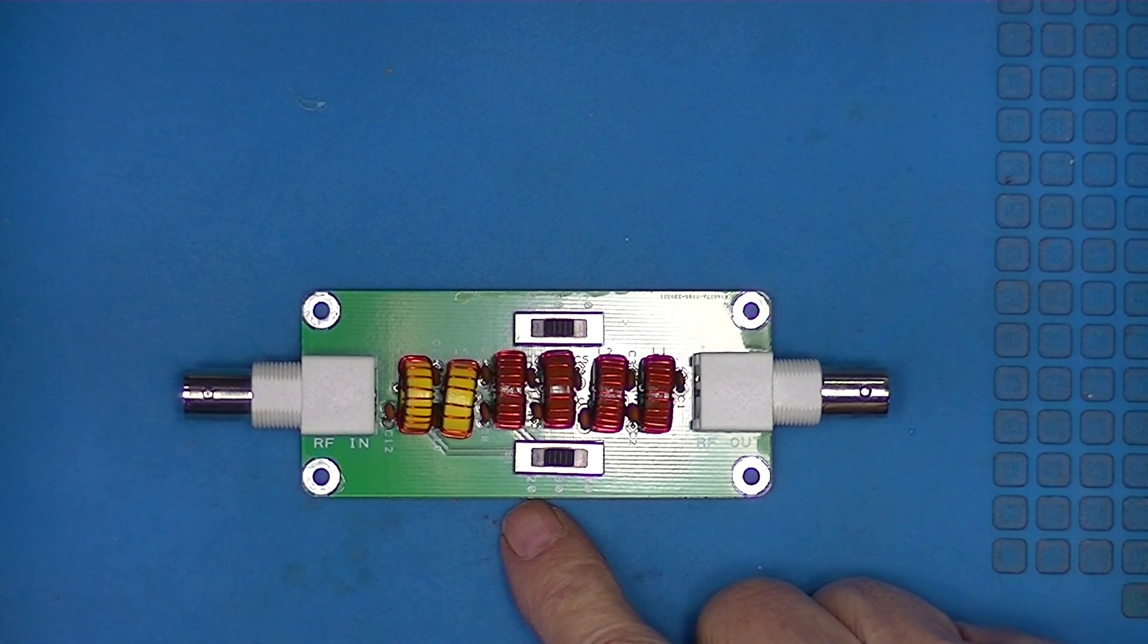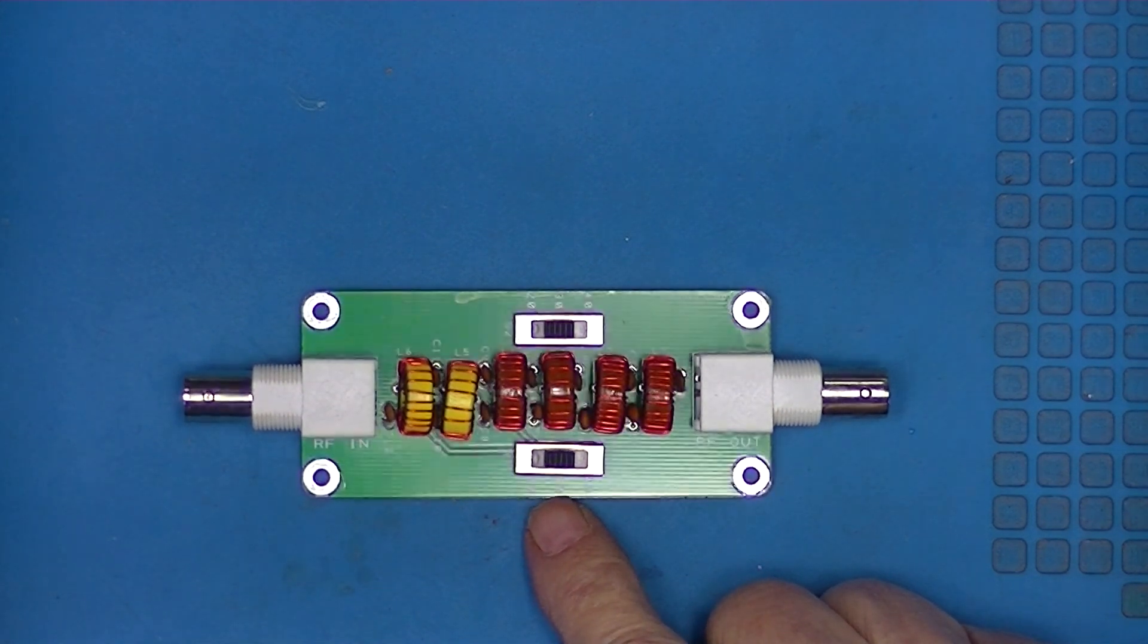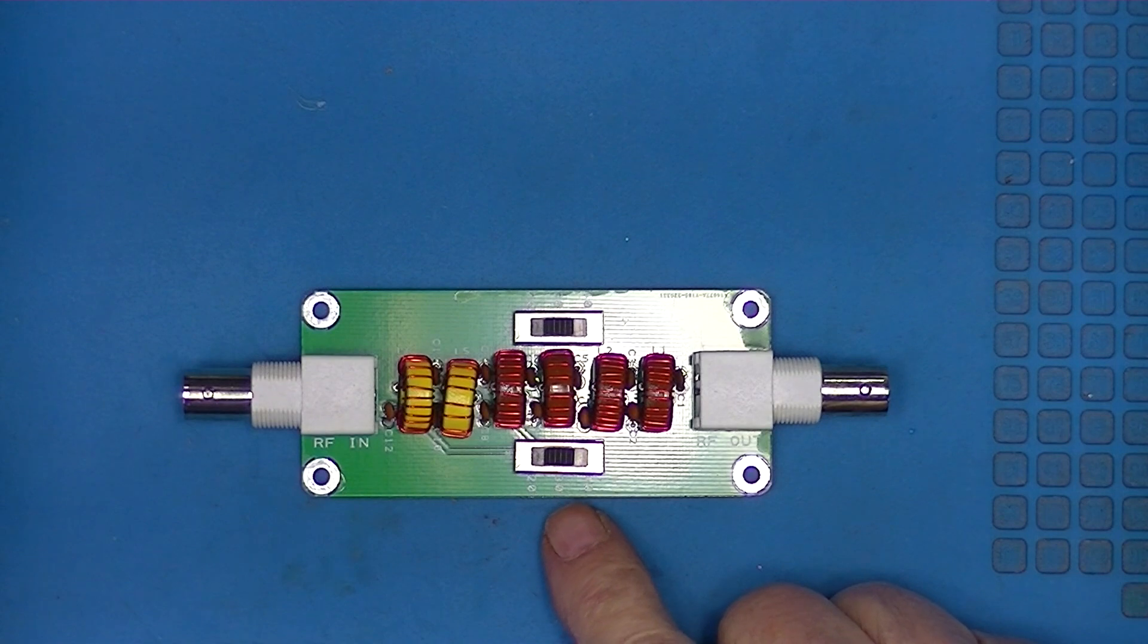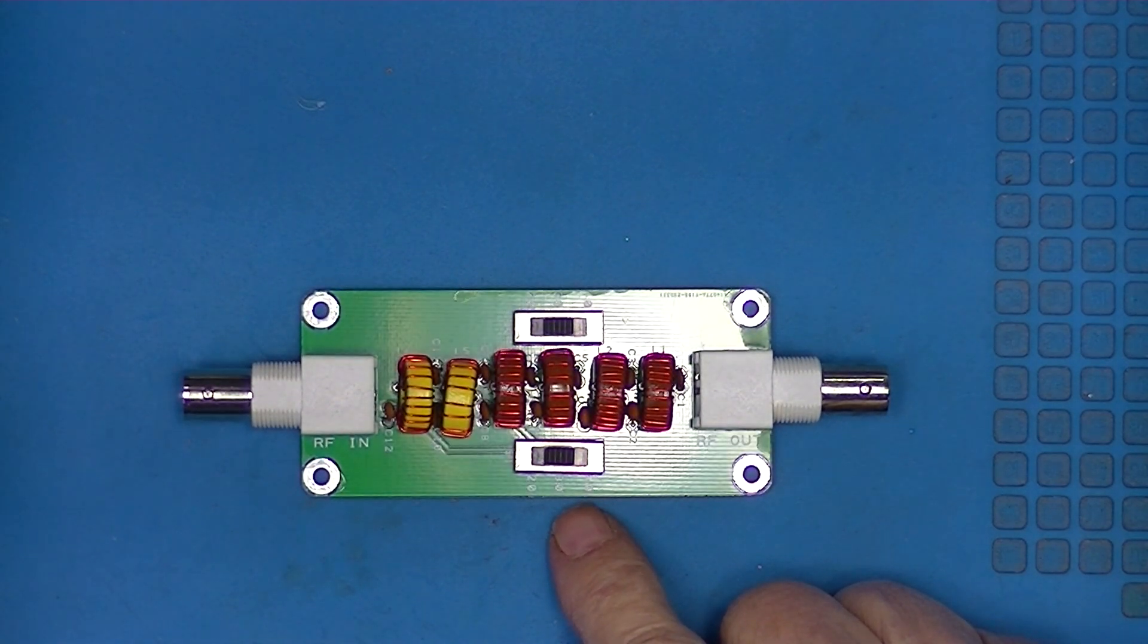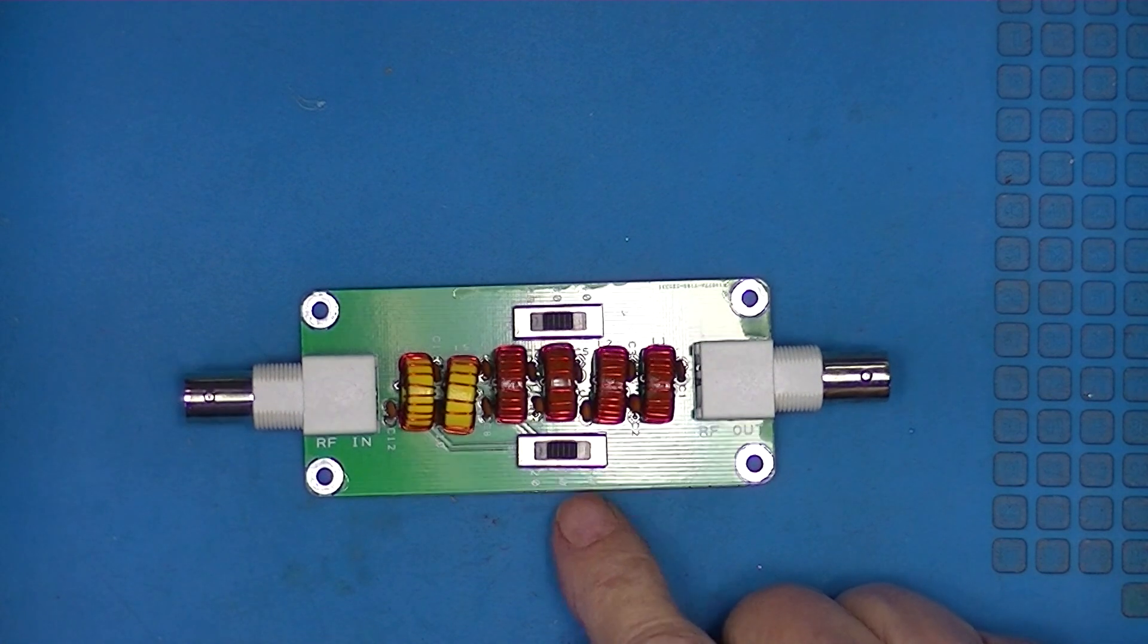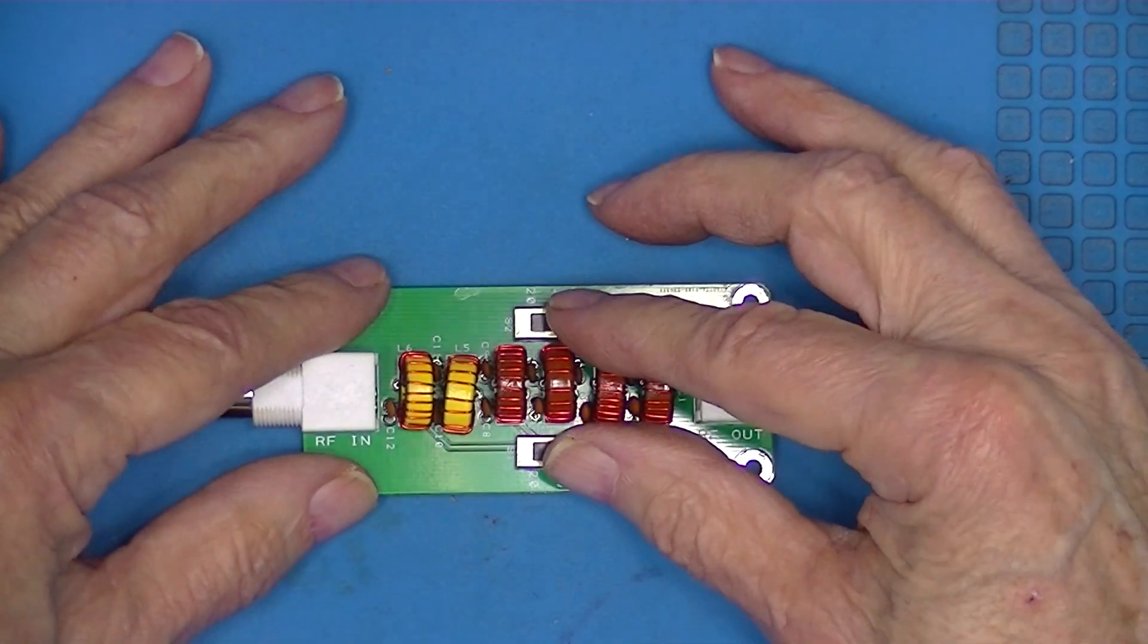20 meters is 14 megahertz, 30 meters is 10 megahertz, and 40 meters is 7 megahertz. In all cases it's a little above the frequencies I gave, and these two switches need to be positioned to select the band desired.